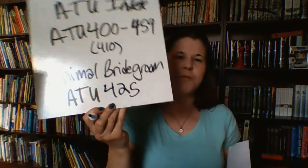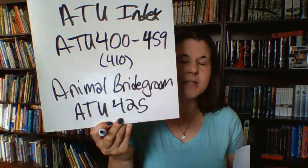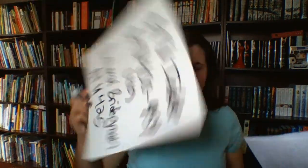ATU 425 is the animal bridegroom — the male who has been transformed. Some people call it the Beauty and the Beast story type. There are two variations of ATU 425, which we'll talk about in a moment.